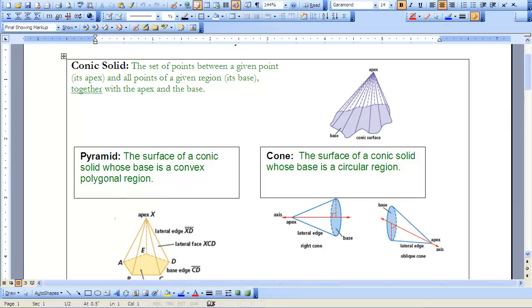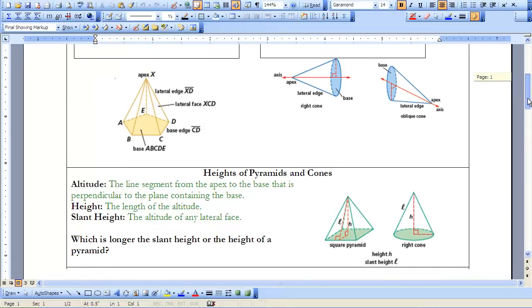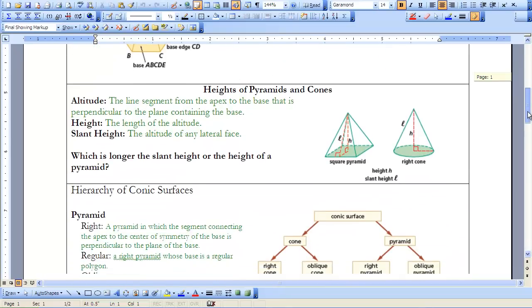When we study pyramids and cones, we will also evaluate different types of heights. When we talk about the altitude of our pyramid or cone, we talk about the line segment from the apex to the base that is perpendicular to the plane containing the base. The height of my pyramid is considered to be the altitude.